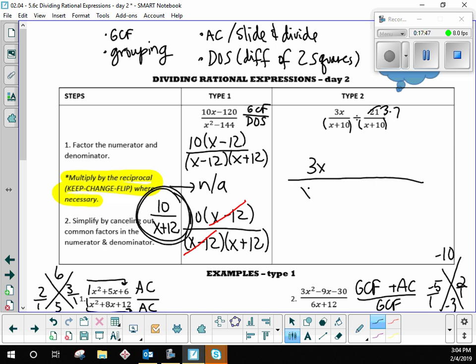So we keep the first fraction the same. It's three over x plus ten. Okay, so that's the keep part. The change part is you take the division, you make it multiplication. And then you flip the second fraction. So x plus ten was on the bottom. Now x plus ten is going to be on top. And then the three times seven is on the bottom. And now we do step two, which is cancel. Give me something that cancels. Give me one. x plus ten. What else? The threes.